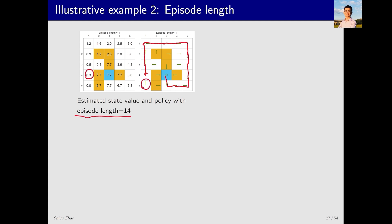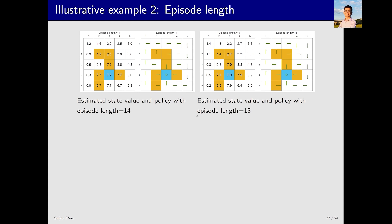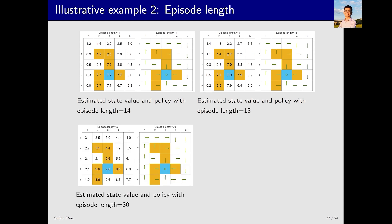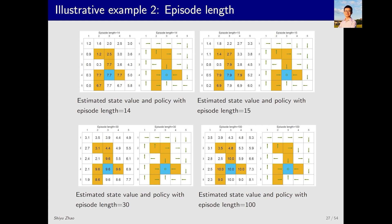Similarly, at this state, going upward is essentially a random choice because its state value is zero, meaning it hasn't actually reached the target. It either stays still or goes upward, and it just happens to choose to go upward. However, when I increase the episode length to 15, it can reach the target. The evidence is that the state value here has become positive. If we continue to increase the episode length, for example, to 30 or 100, the policy basically remains unchanged. The only change is the state value, and the estimation of the optimal state value keeps changing. When the episode length is large, such as 100 or close to infinity, the estimated optimal state value is close to the true value.